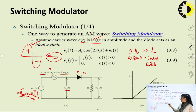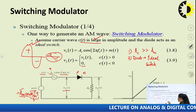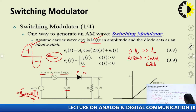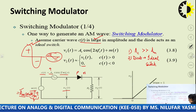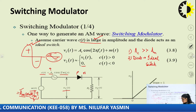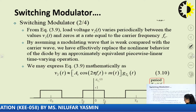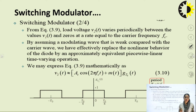My switch acts as a closed switch for the positive half cycle of the carrier and as an open switch for the negative half cycle. So we get V2 as 0 for that condition. If I plot the graph between V1 and V2, it would be a graph with slope equal to 1. The load voltage V2 varies periodically between two values: either V1(t) or 0, oscillating at the rate of the carrier frequency f_c.